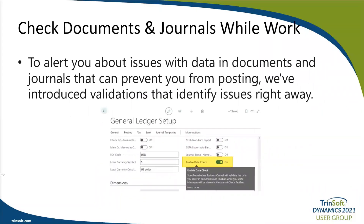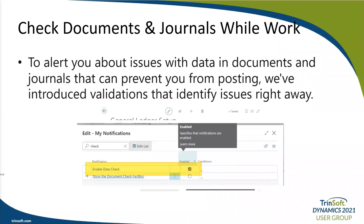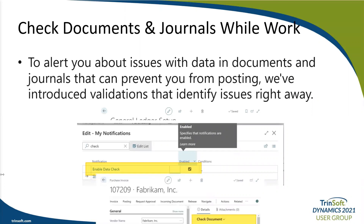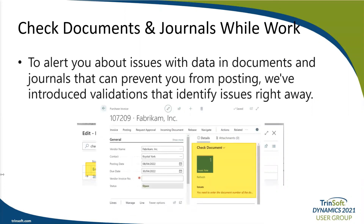We also want to highlight the new 'check documents and journals while working' feature. This is intended to alert you about issues in documents and journals that can prevent you from posting. If your administrator enables this feature on the feature management page, Business Central will validate the data you enter on documents and journals while you work. The document check fact box will appear and show a total number of issues found. You can turn off the document check on the My Notifications page.